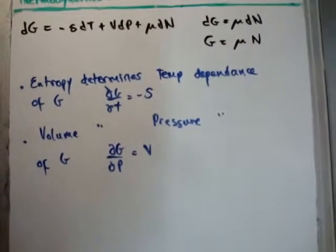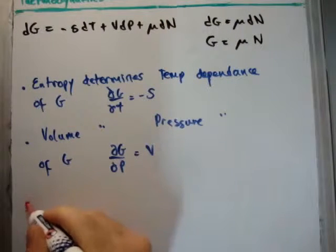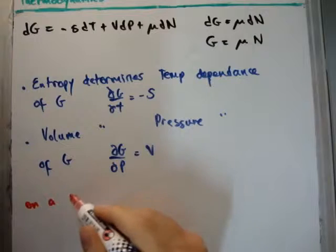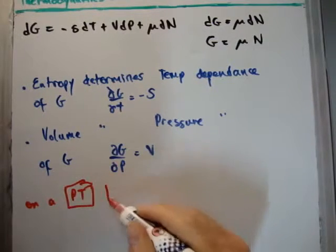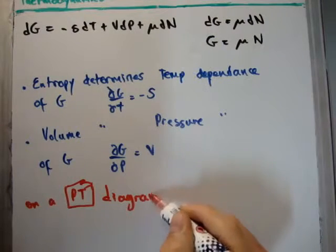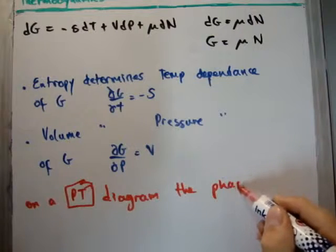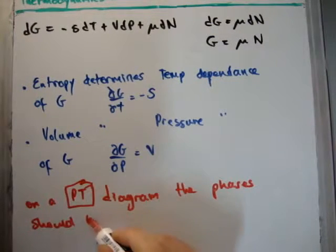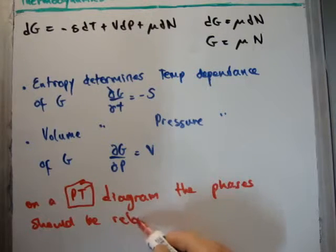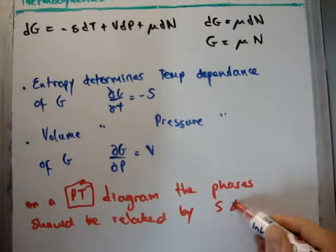This suggests that on a PT diagram, the phases should be related by S and V.